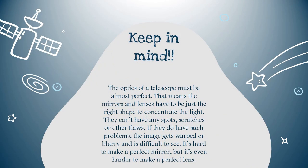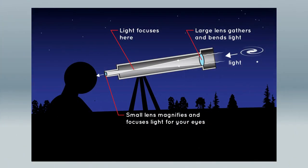The optics of a telescope must be perfect — the mirrors and lenses must be the exact correct shape to concentrate the light, with no spots, scratches, or flaws. If such problems exist, the image becomes warped or blurry. It is hard to make a perfect mirror, but it is even harder to make a perfect lens. As shown in the diagram, the larger lens gathers the light, which then travels through the length of the optical tube, and is focused and magnified by the smaller lens for our eyes.